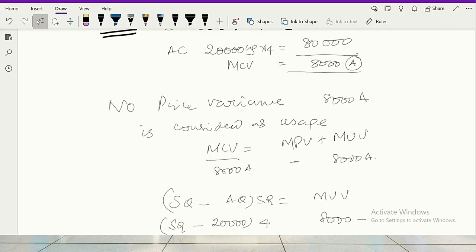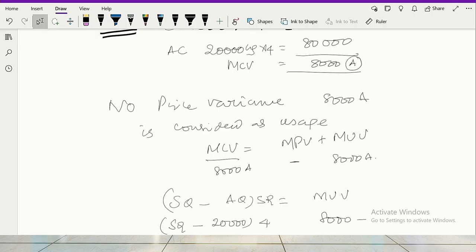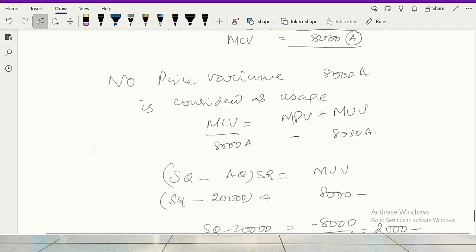Now 8000 adverse in terms of quantity. This is in terms of rupees divided by standard rate. 8000 divided by 4, that is equal to 2000 kgs. Then we are applying relevant cost. What is the concept of relevant cost here? You are introducing the concept of opportunity cost.